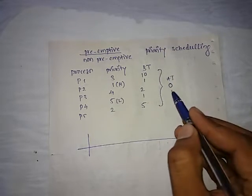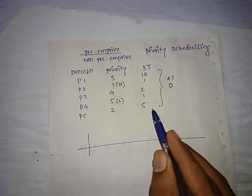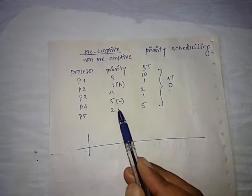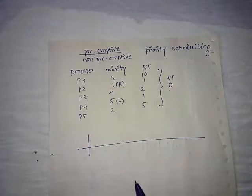This means at time zero, all five processes are in the system. Now, the simple task is to find out which process has the highest priority and schedule that task. Starting from zero, the highest priority is P2, so we can directly schedule P2.